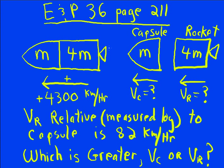Let's take a look at a problem involving conservation of momentum where we're given the relative velocity of the objects after a separation. This is exercise and problem number 36 from page 211 from Halliday-Resnick-Walker, 5th edition. We have a rocket and its payload capsule moving to the left at 4,300 kilometers per hour.